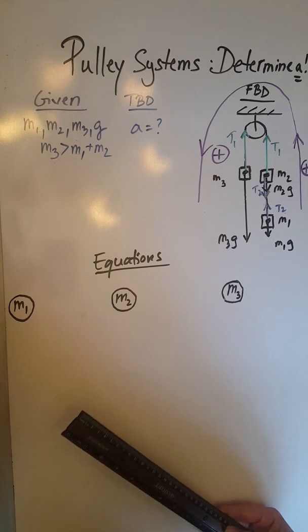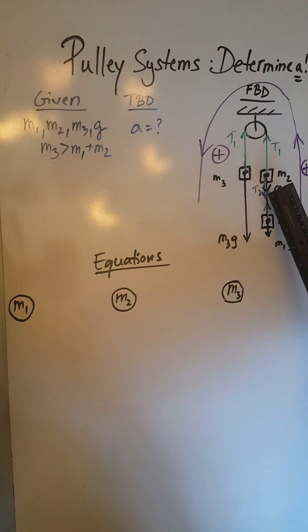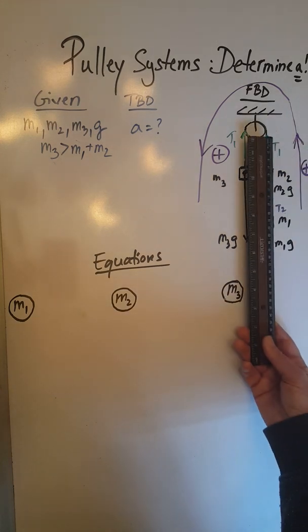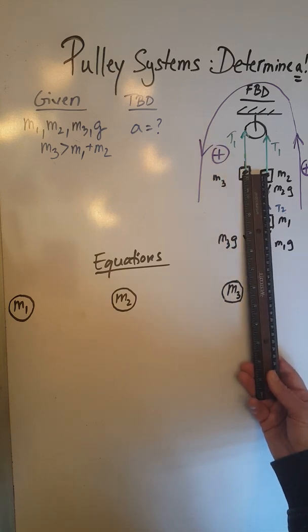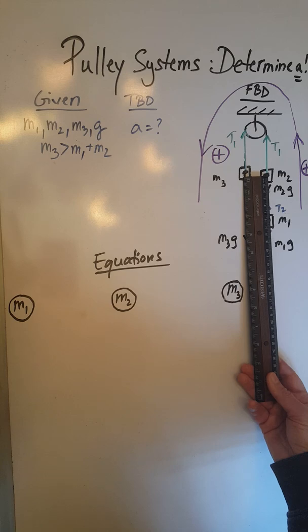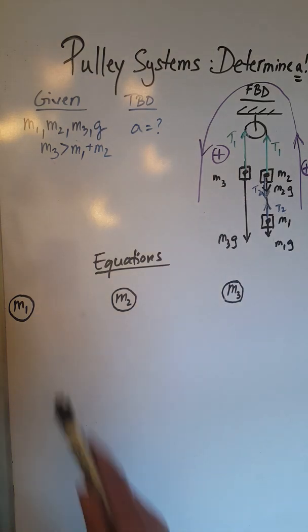M2 has T1 pulling upward, T2 pulling downward, and M2G also going downward. T1 must be greater in magnitude than the sum of T2 and M2G. While T1 is five centimeters, T2 is three and M2G is 1.8, so three plus 1.8 is 4.8. Five is greater than 4.8, so I'm good there with the unbalanced forces.